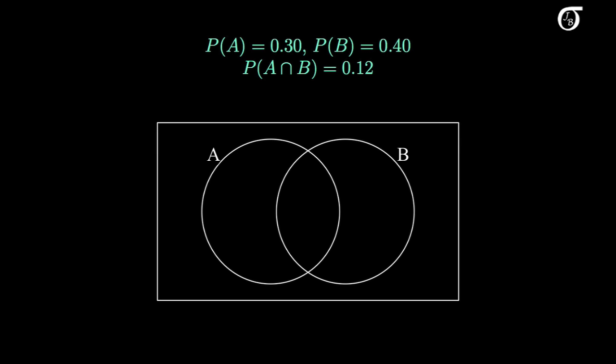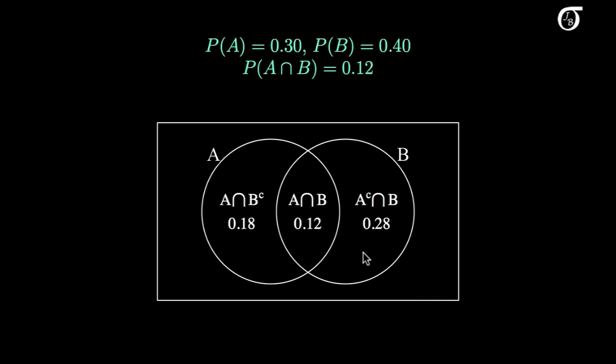In a typical Venn diagram, the sizes of the circles do not have any meaning, so Venn diagrams aren't going to help illustrate independence at all. Here we have a circle representing event A and a circle representing event B. The intersection of A and B has a probability of 0.12. The entire circle of A has a probability of 0.30, so this portion has a probability of 0.18 — this portion being the intersection of A with B complement, everything outside of B. Similarly, this portion out here has a probability of 0.28, and the outside region has a probability of 0.42. But since the sizes of the circles don't have meaning, this type of diagram isn't going to help illustrate independence at all — we'd just be doing a calculation and seeing if the independence rules hold.